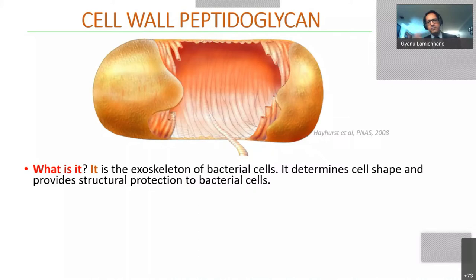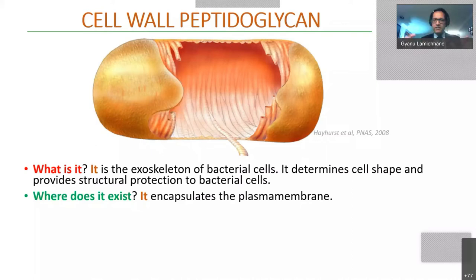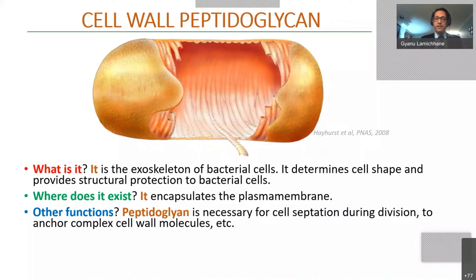Please remember: the peptidoglycan is the structural component of the cell wall. It exists exterior to the plasma membrane, encapsulating the entire plasma membrane, and all bacteria have it. Peptidoglycan is also necessary for cell septation during division — new peptidoglycan is synthesized in the septum so that two daughter cells can divide. It also anchors a lot of complex molecules — lipids and peptides — that become part of the cell wall exterior to the peptidoglycan, and that is exposed and interacts with the host during disease.